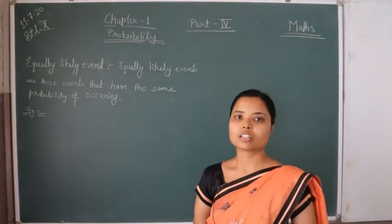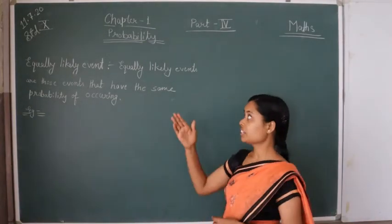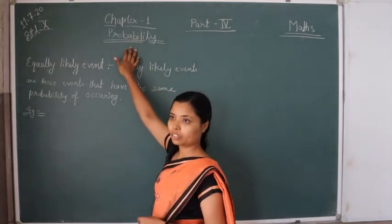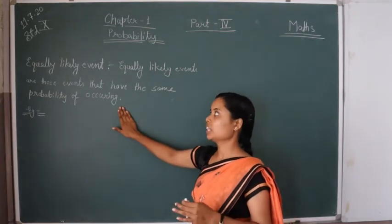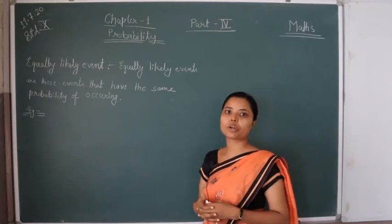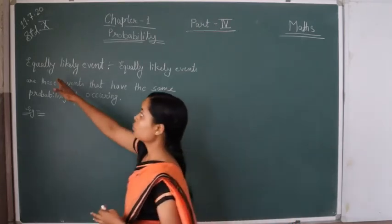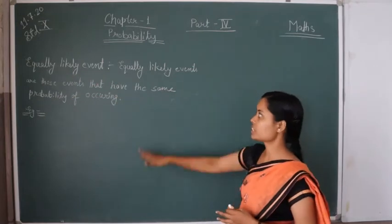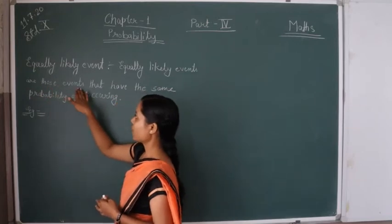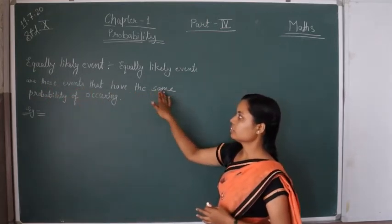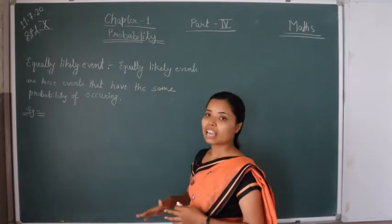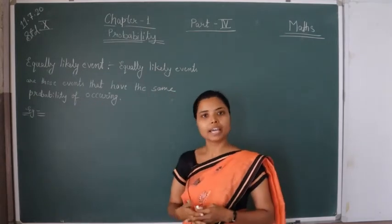Welcome dear students to another part of our class, standard 10th, subject maths, chapter 1st, probability. Today we will start equally likely events and then move to exercise 15.1. Firstly we will look at the definition. Equally likely events are those events that have the same probability of occurring. We will understand this by an example.